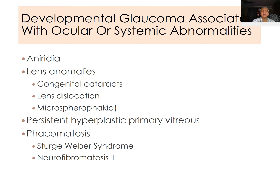If congenital glaucoma is not controlled with trabeculotomy or goniotomy, trabeculectomy or a valve procedure is used to control intraocular pressure. Surgery in children is more difficult because the sclera is not rigid, so there tend to be more flat-chamber changes postoperatively compared to adults, and it must be done carefully by an experienced surgeon.